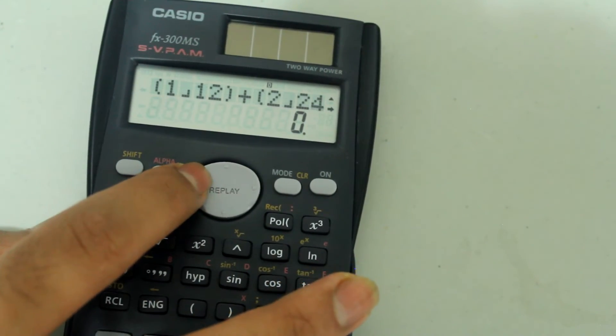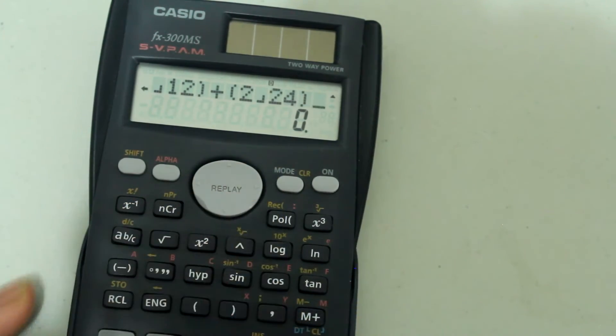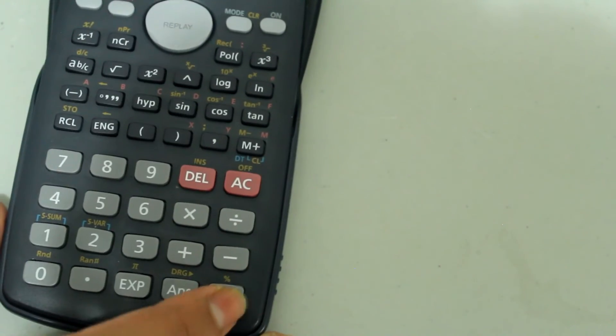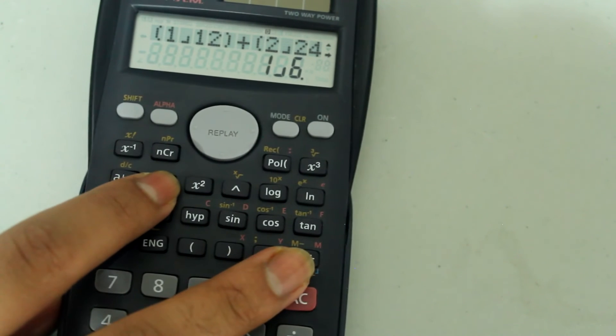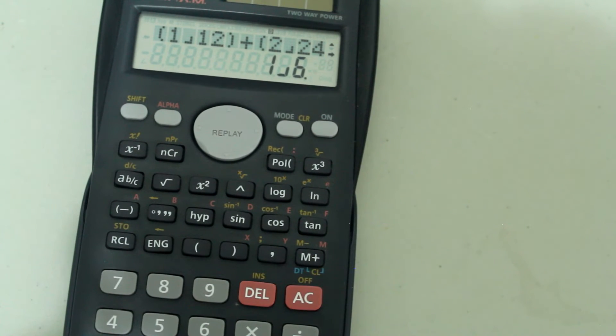1 over 12 plus 2 over 24, press equals, and I get the answer in the simplest fraction form.